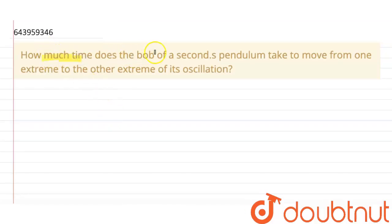How much time does the bob of a seconds pendulum take to move from one extreme to the other extreme of its oscillation? So it has asked for the time taken by the bob to travel from one extreme—this is its mean position—to another extreme. Let's say from position one to position two.